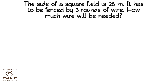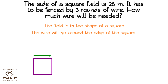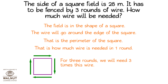The side of a square field is 28 meters. It has to be fenced by 3 rounds of wire. How much wire will be needed? The field is in the shape of a square. The wire will go around the edge of the square, that is the perimeter of the square. That is how much wire is needed in one round. For 3 rounds, we will need 3 times this wire.